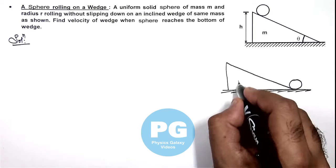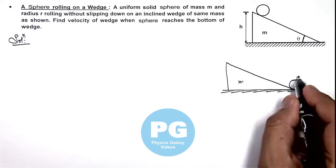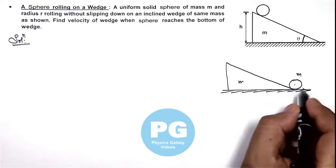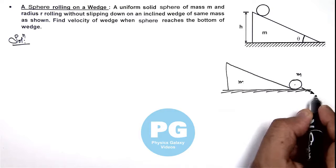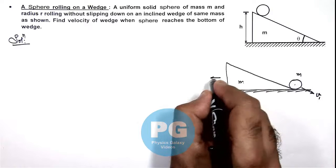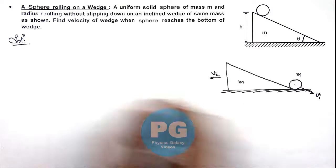Here the wedge is of mass m and the sphere is also of mass m. Here we can consider if this sphere attains a velocity v1 with respect to the wedge and wedge is moving toward left with a velocity v2 with respect to ground.